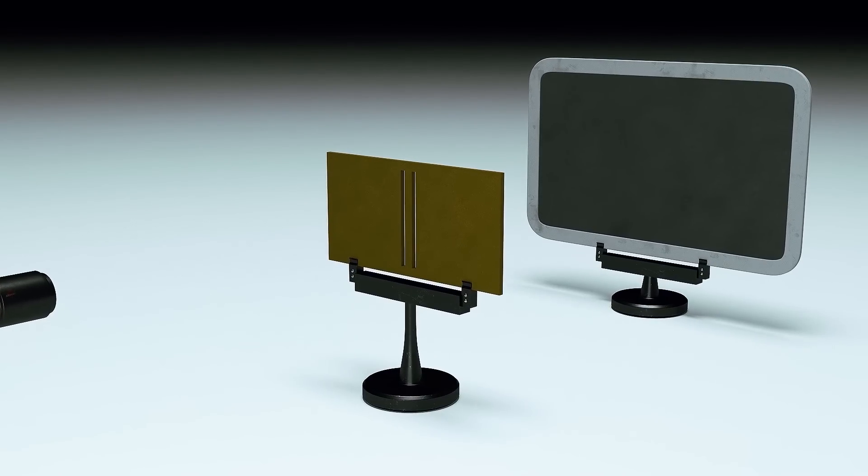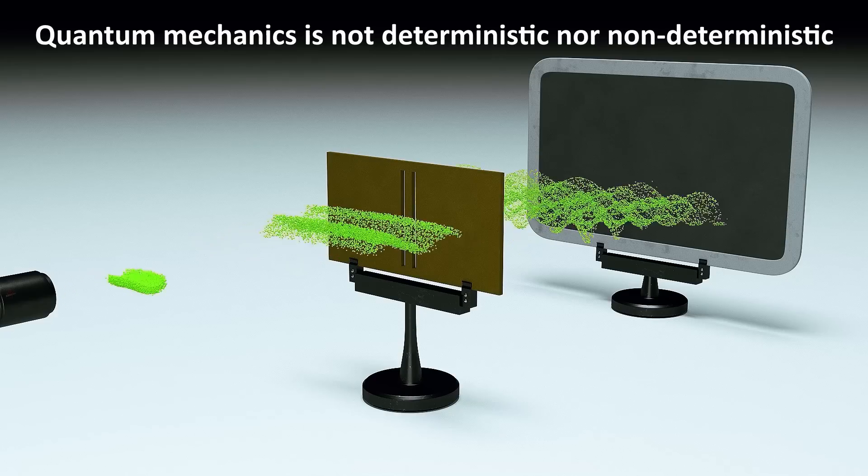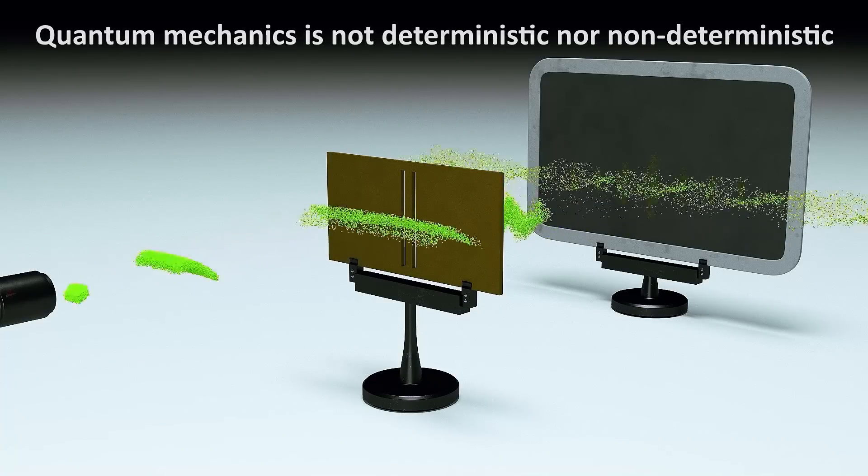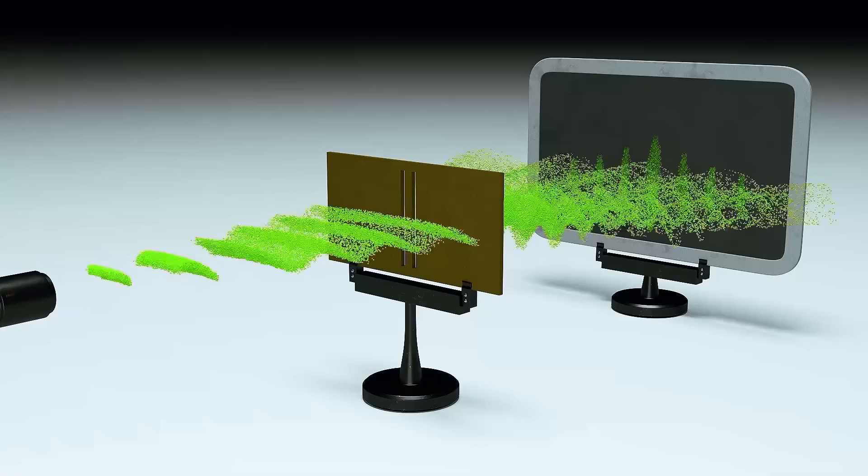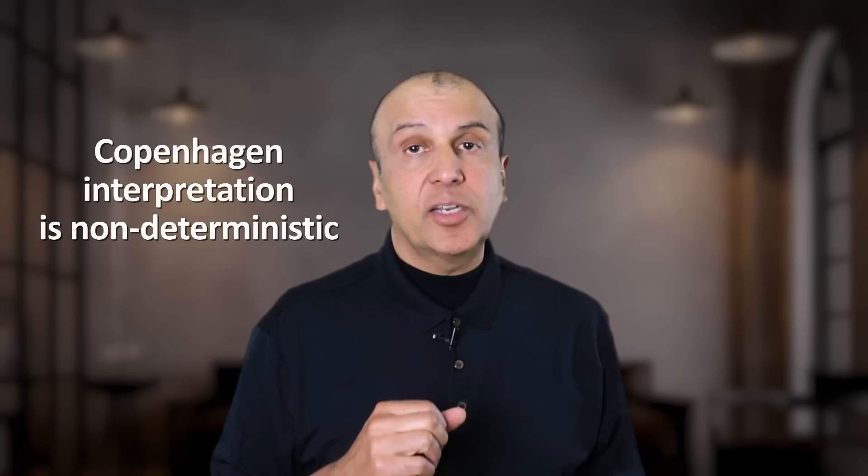I'm going to let you in on a little known fact. Quantum Mechanics is not non-deterministic nor deterministic. It's the interpretation of quantum mechanics where the non-determinism comes from. It so happens that what I described earlier comes from the most popular interpretation, the Copenhagen interpretation, which is a non-deterministic interpretation.